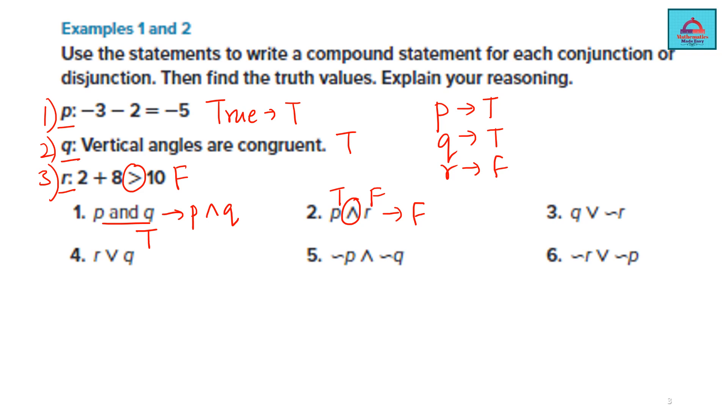Next is disjunction so q and negation of r so if r is false negation of r is true so q is true and negation of r is also true so therefore if you see the disjunction it is also going to be true. Let's do this r r is false q is true and you are calculating the disjunction here so disjunction is going to be true even if one is true the answer for this is going to be true.